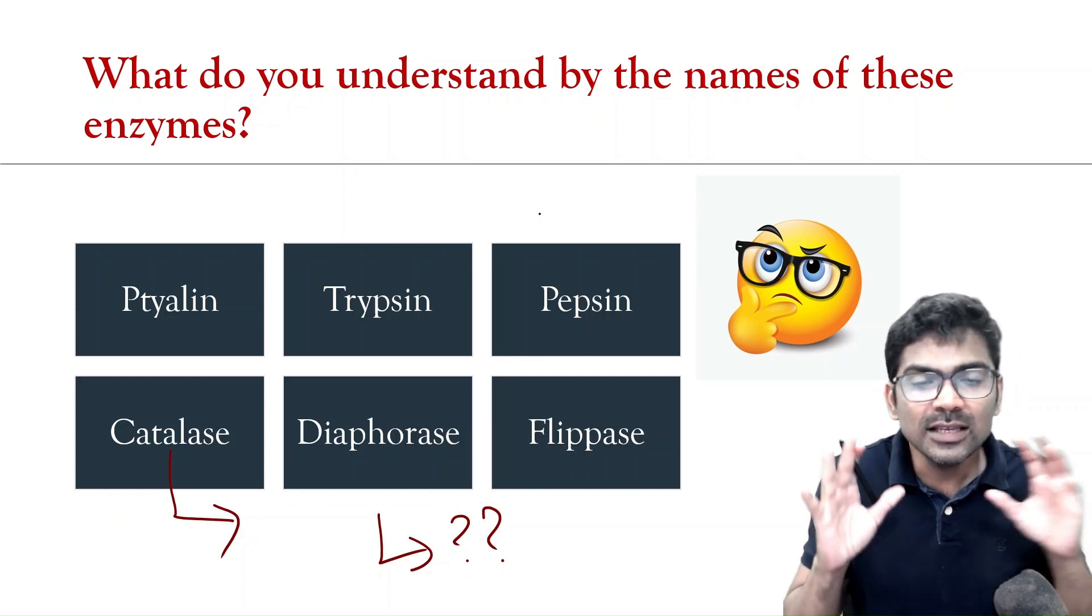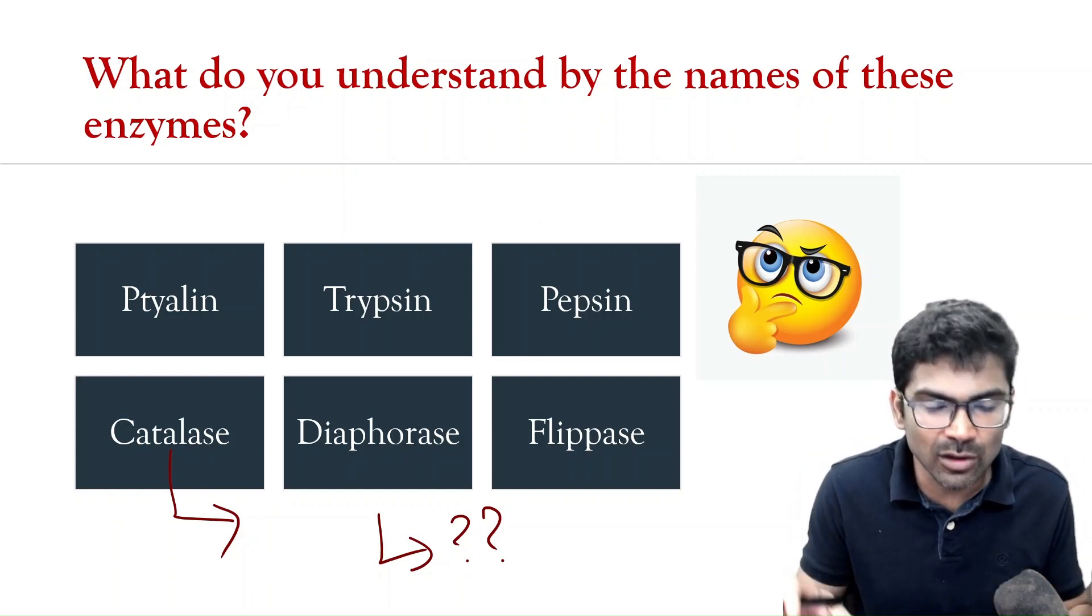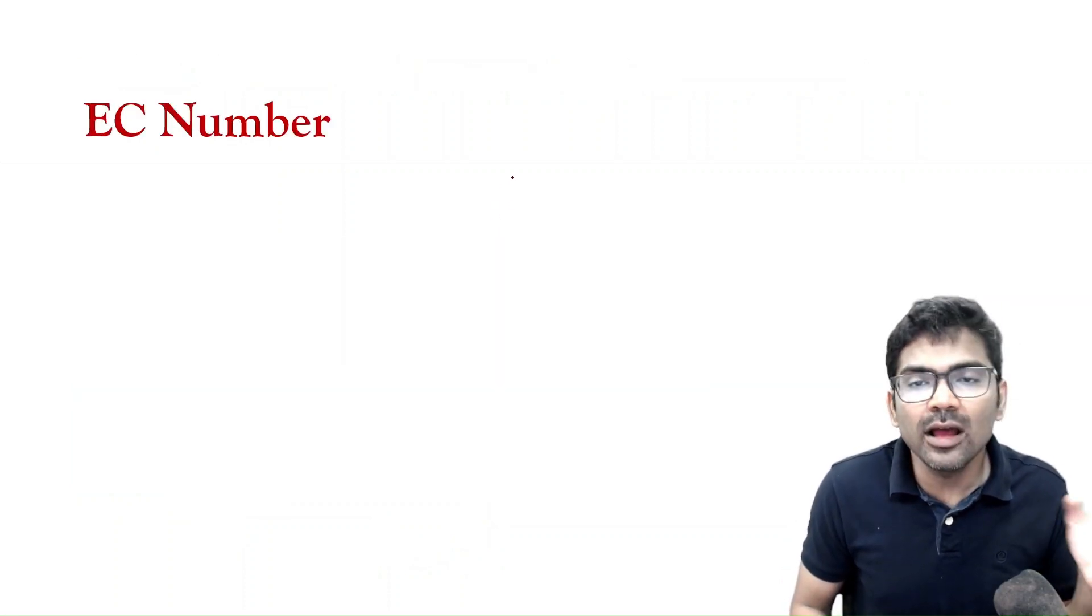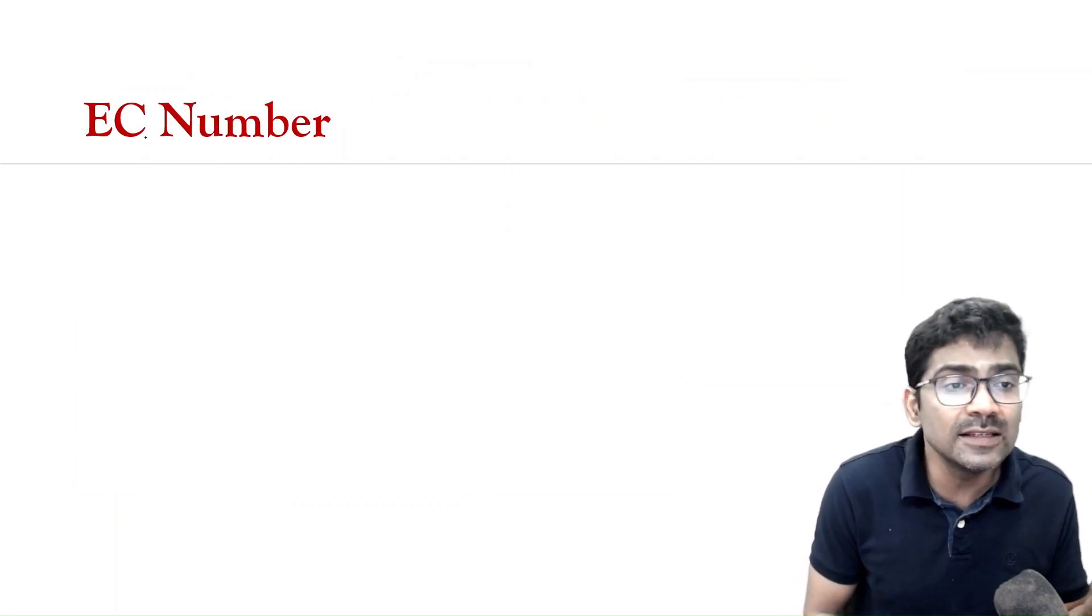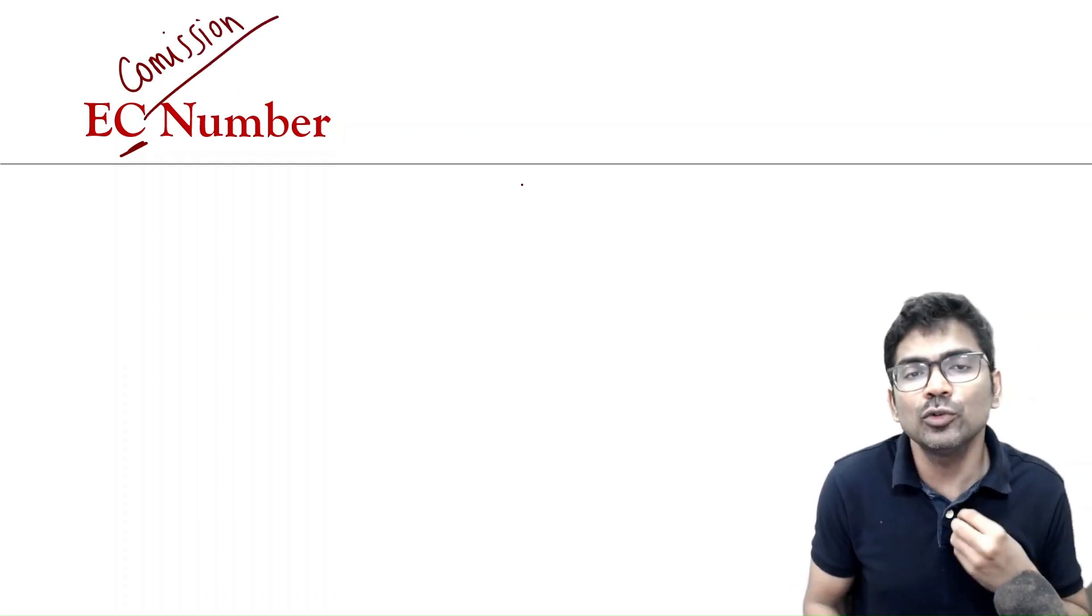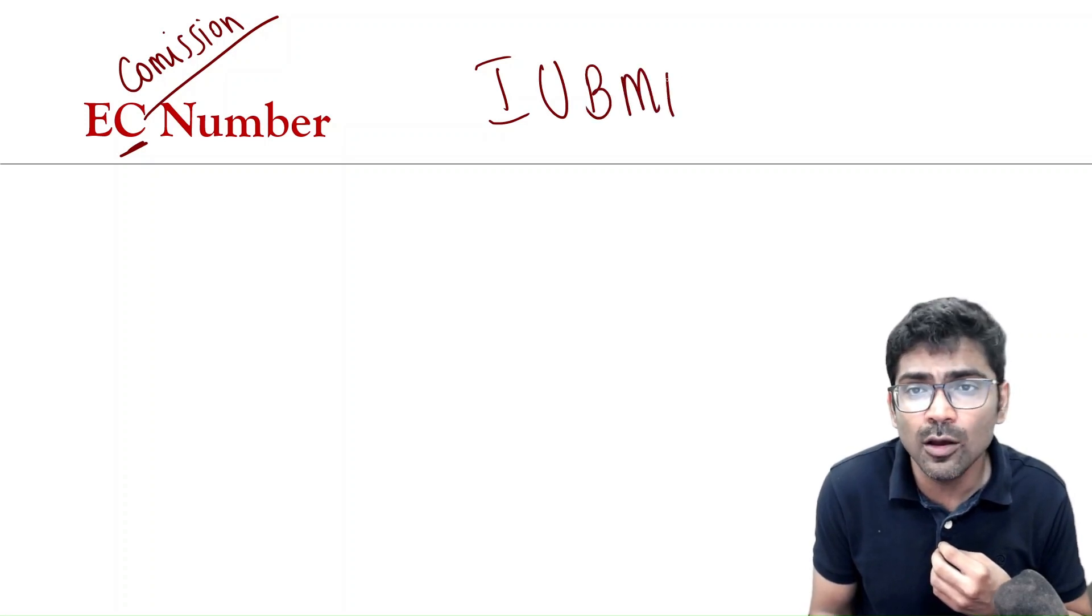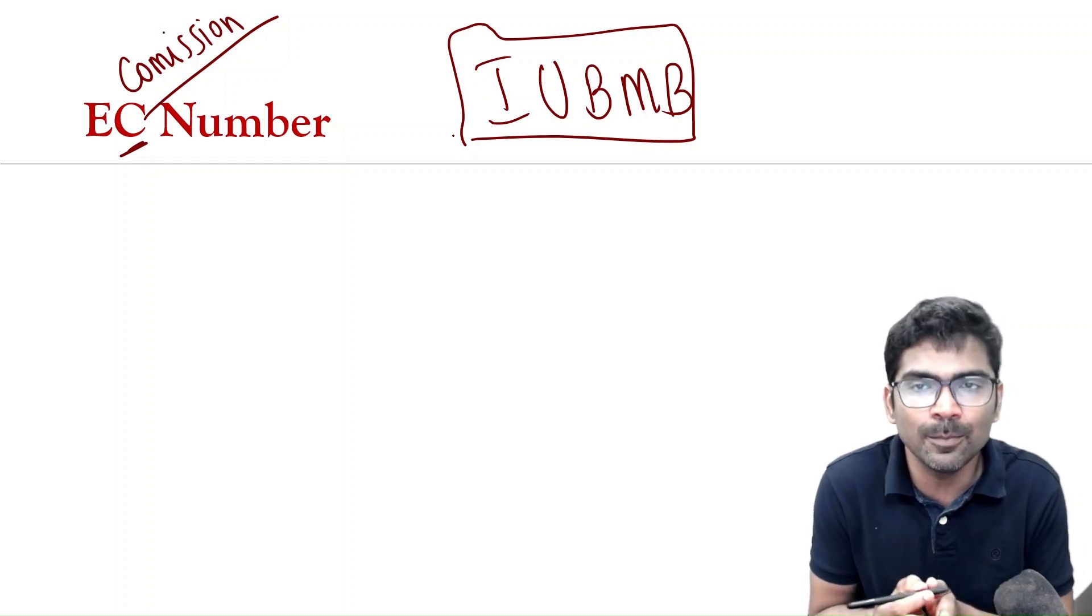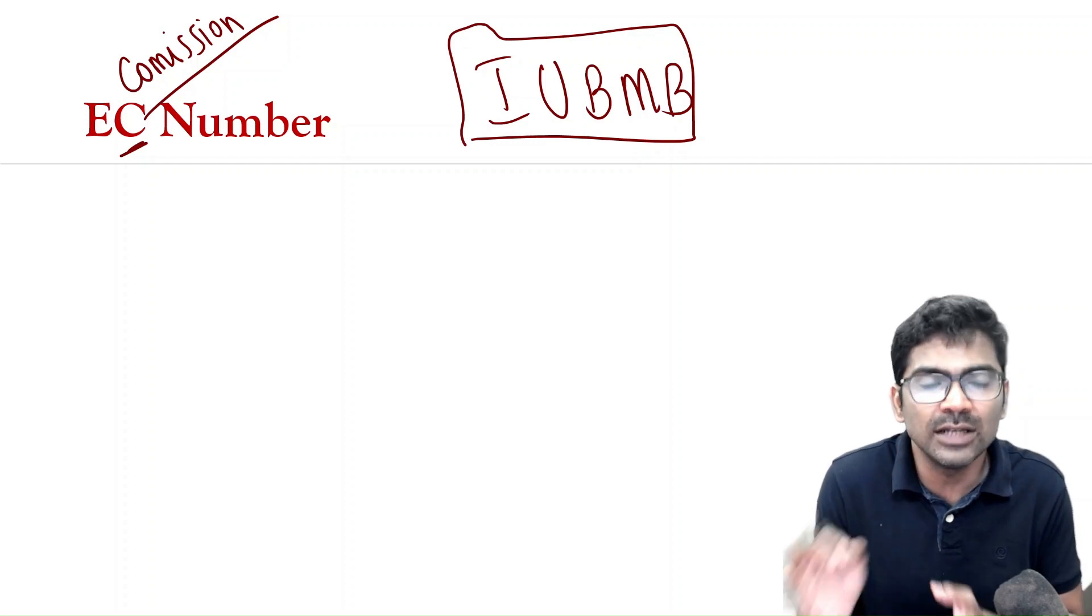So, just by looking at the name, we cannot guess the action of this set of enzymes. So, to avoid ambiguity, EC number, that is enzyme commission number, is proposed by International Union of Biochemistry and Molecular Biology. IUBMB classified enzymes and it gave enzyme commission number.